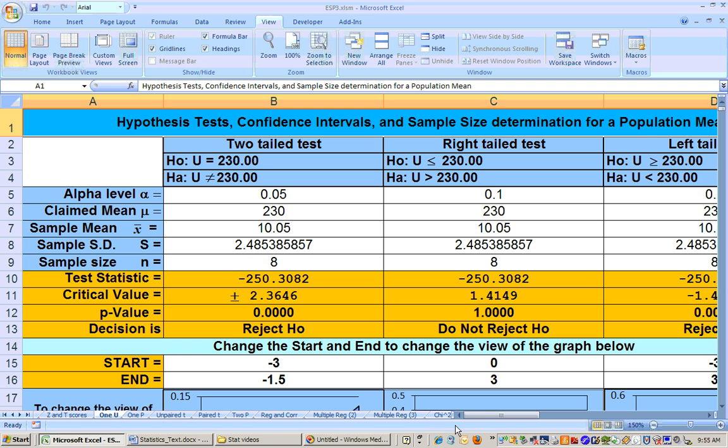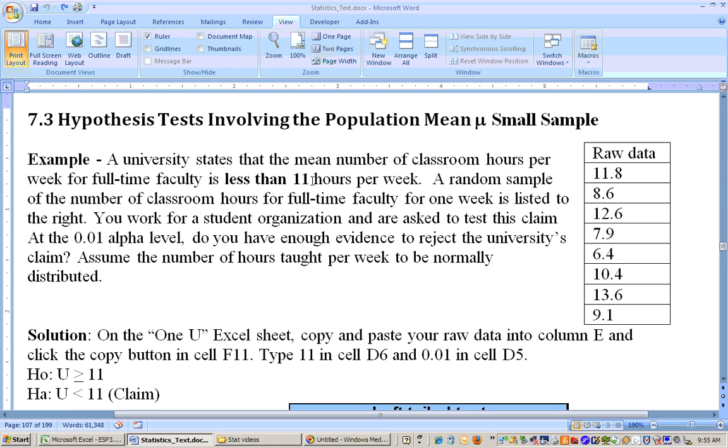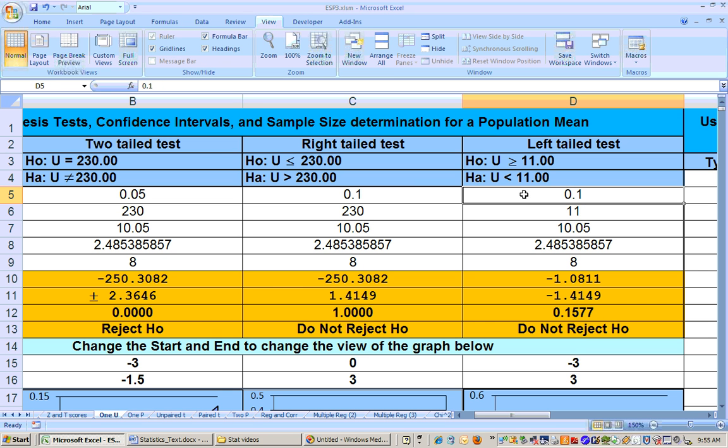We're doing a left tail test. So we are right here in this area, and we have to put in the claimed mean. And I believe that was 11 when you look at the problem. And it said to run this at the 0.01 alpha level. See less than 11. So that's your mu, that's your border line there, 11. And then your alpha level is 0.01. So let's go ahead and put that in, your alpha level of 0.01. And at this point, we're pretty much done.